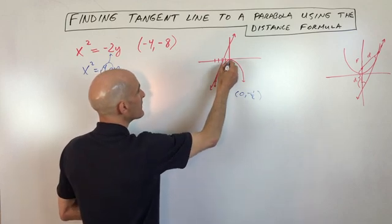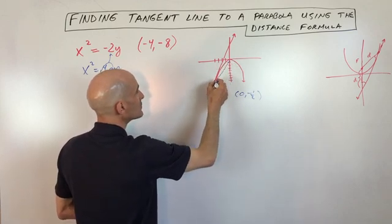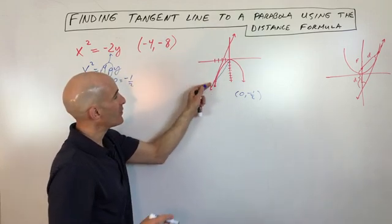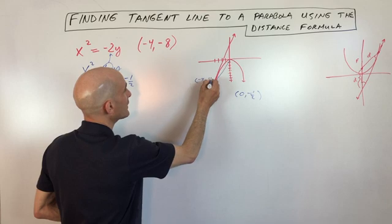And we want to find the distance from that point to the point where the tangent line just barely touches the parabola. And this point over here is negative 4, negative 8. So what we're going to be doing is we're going to be doing the distance formula.